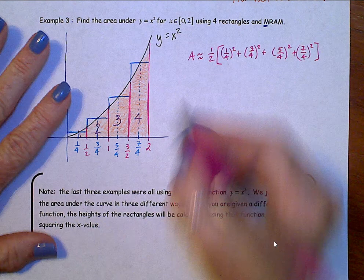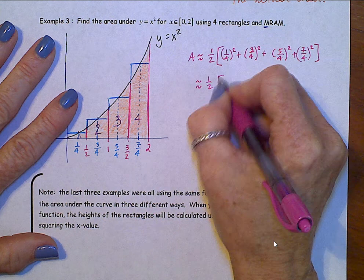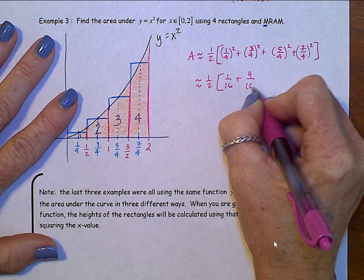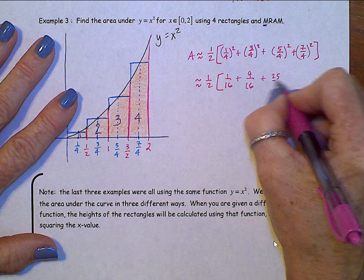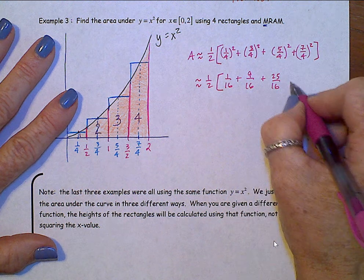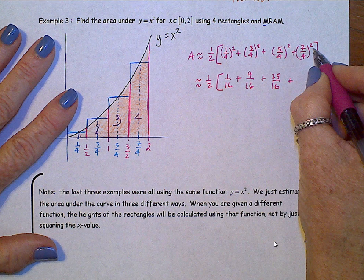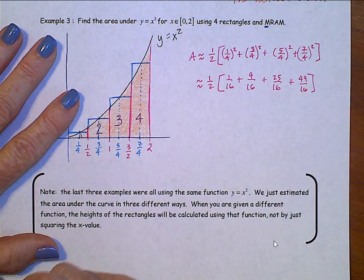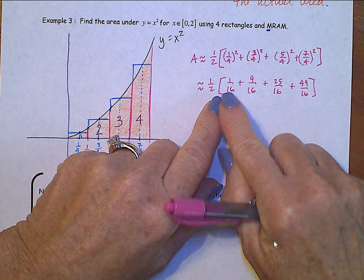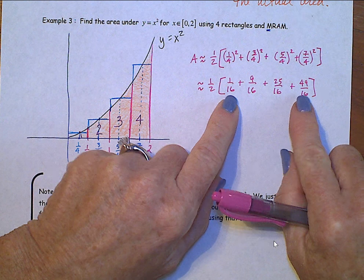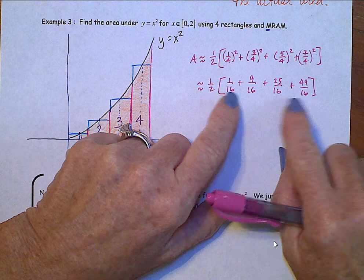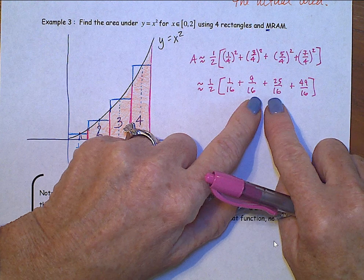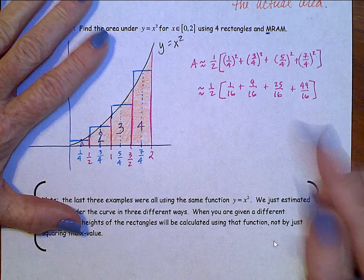When we clean this up, one half, inside of here, we'll have one sixteenth plus nine sixteenths plus 25 sixteenths plus 49 sixteenths. When we go ahead and add these up, this one sixteenth and 49 sixteenths, that's 50 sixteenths, plus nine and 25 is 34. So, 50 and 34 is 84 sixteenths.